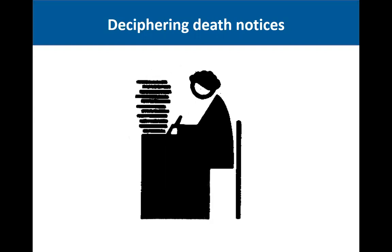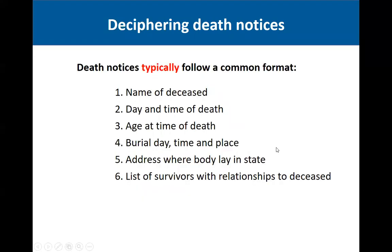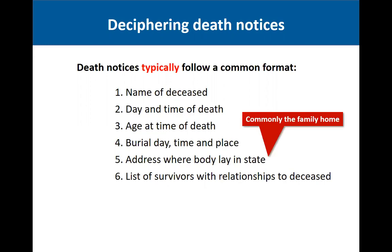So once you find the death notice, how do you decipher it? Death notices in these classified ads typically follow a common format. Earlier ones may vary a bit, but as time went on they took on a definite format. Typically it will give the name of the deceased, the day and time of death, the age at time of death, the burial day, time and place, the address where the body lay in state, and a list of survivors with their relationships to the deceased. The address where the body lay in state was commonly the family home — in the 19th century, the deceased was kept at the home until the time of the funeral.